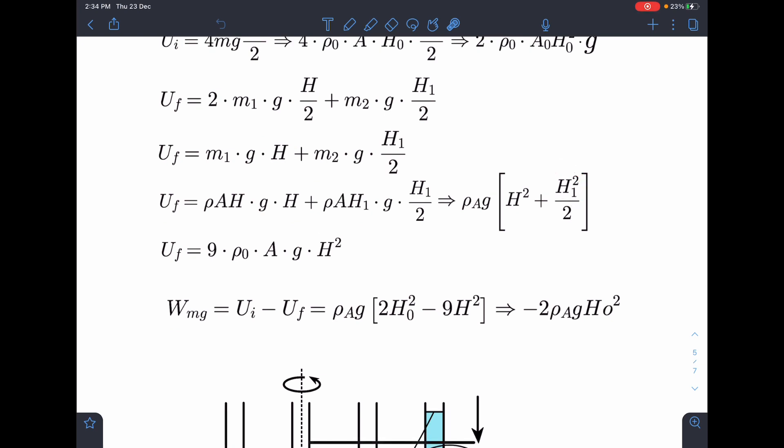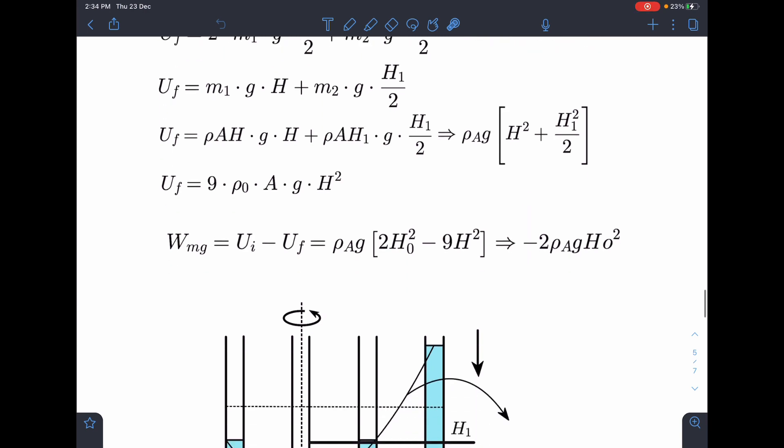So if I substitute here 4h, this will become 16, 16 by 2, 8 and h, 9. So this will become U final and here if I can calculate now U initial minus U final which is going to give me minus 2 rho A g h0 square. So this is going to be the W mg. Now comes another part here.